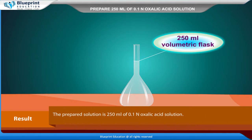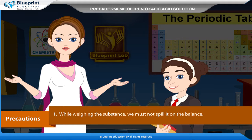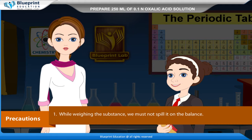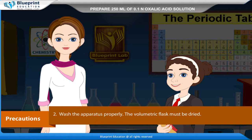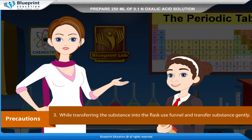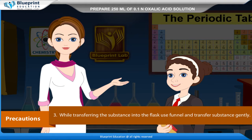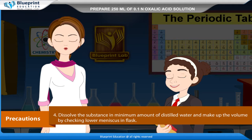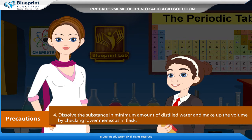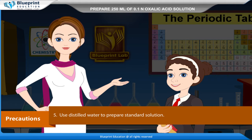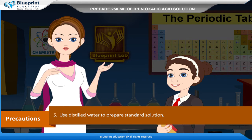Result: The prepared solution is 250 ml of 0.1 N oxalic acid solution. Precautions: While weighing the substance, do not spill it on the balance. Wash the apparatus properly. The volumetric flask must be dried. While transferring the substance into the flask, use a funnel and transfer gently. Dissolve the substance in minimum amount of distilled water and make up the volume by checking the lower meniscus in the flask. Use distilled water to prepare the standard solution.